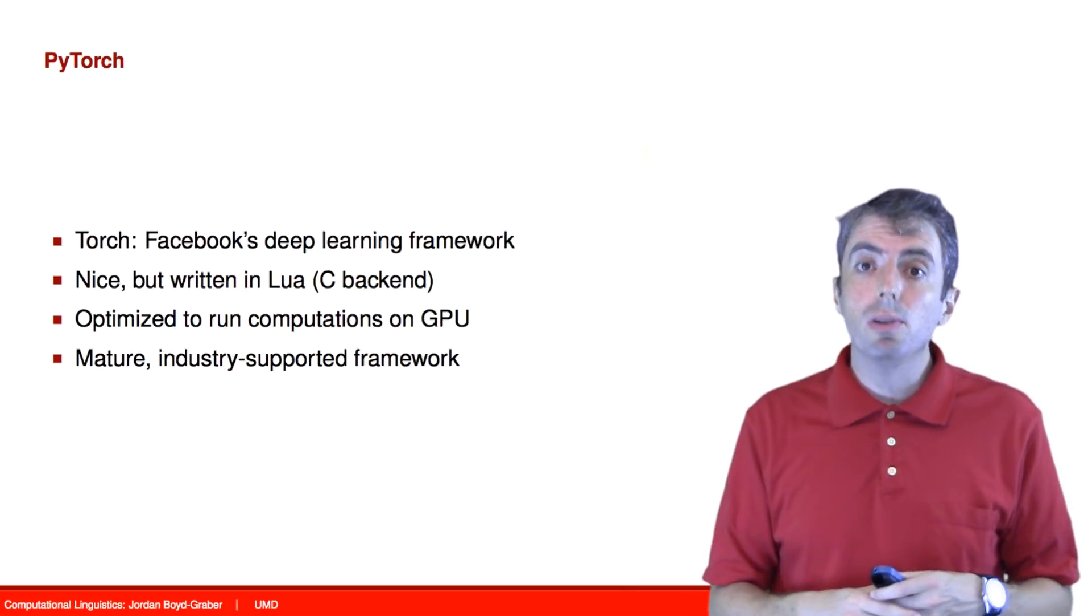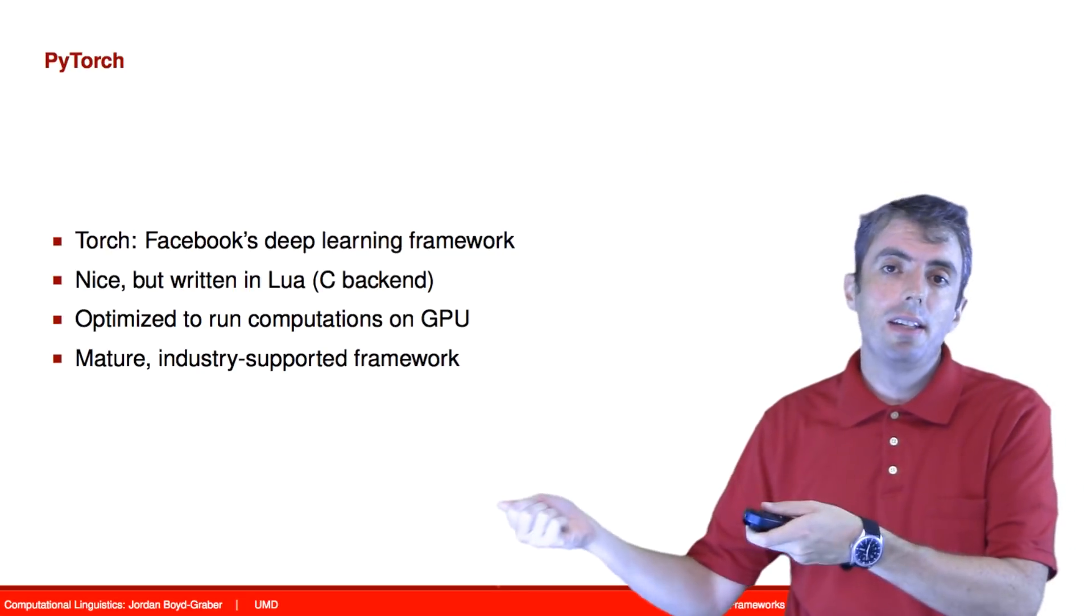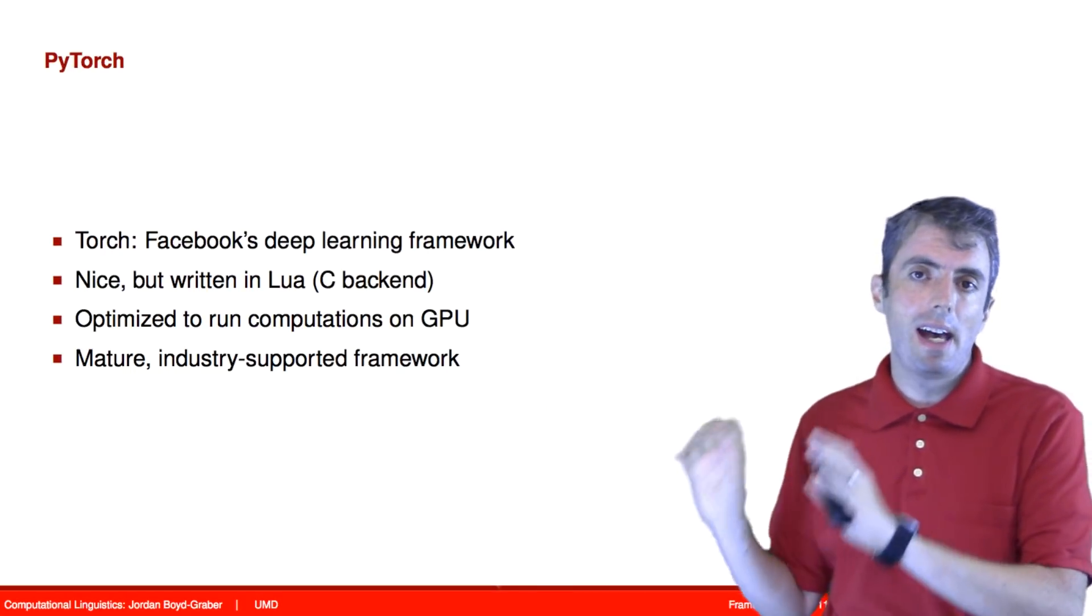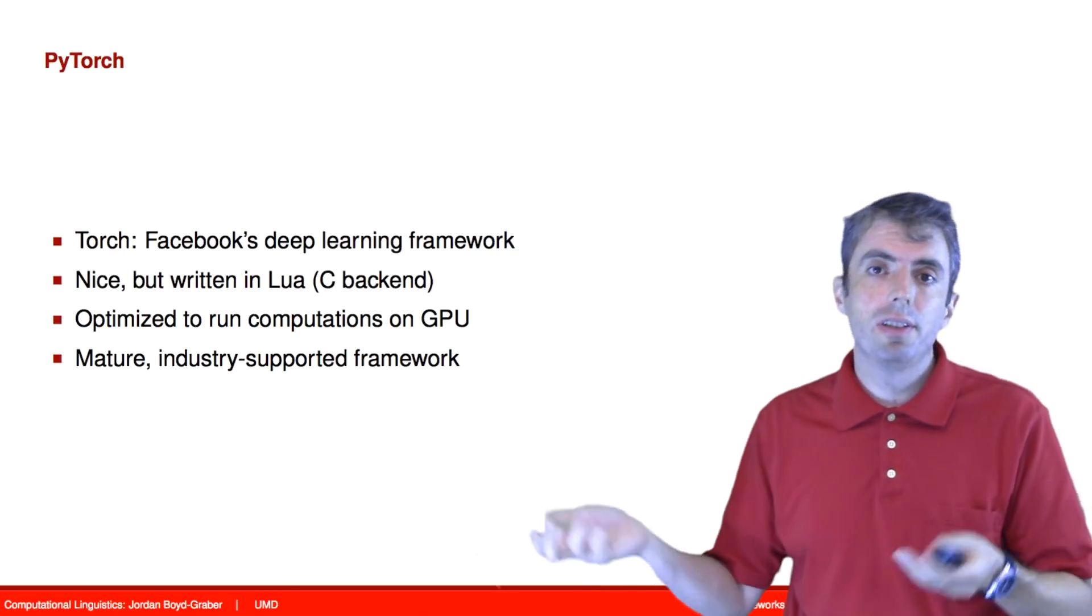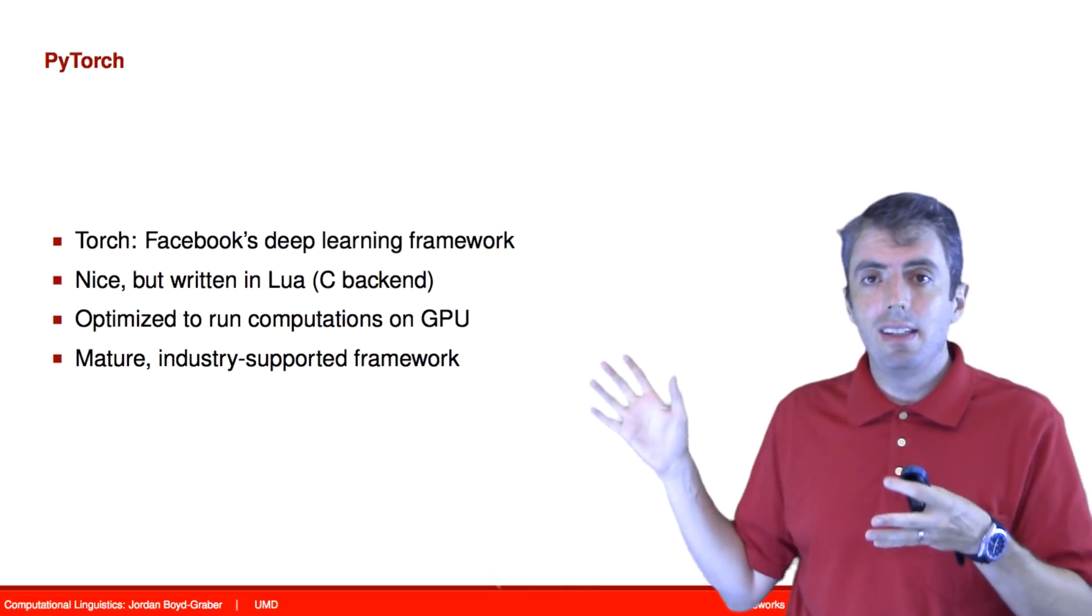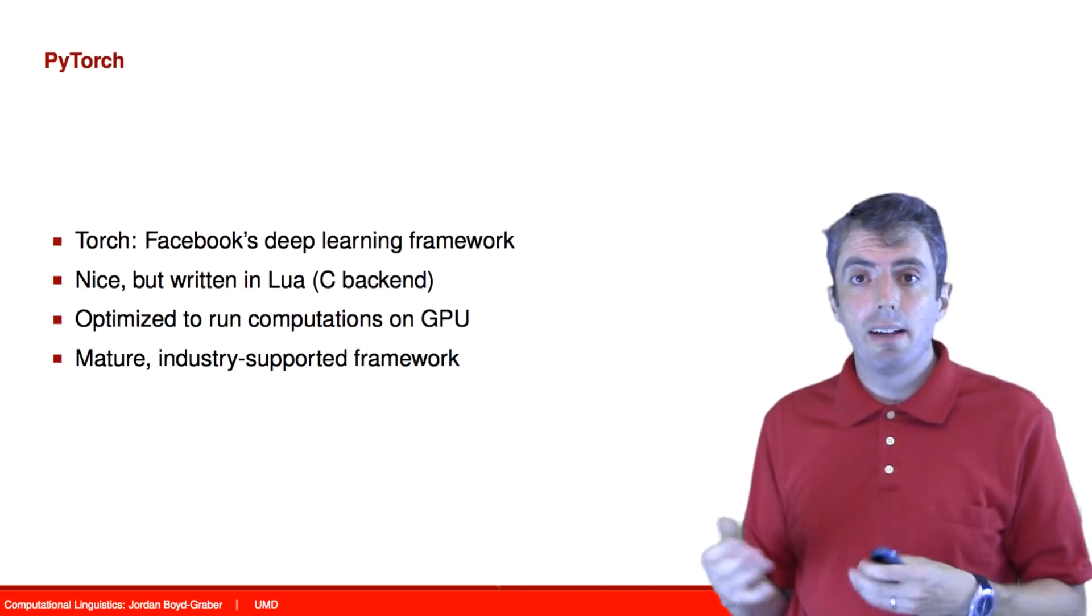And while there are several frameworks that allow us to do that, we'll be focusing on PyTorch. PyTorch grew out of a Lua framework for deep learning. It then transitioned into Python. In both cases, they're using a very, very fast C backend. And PyTorch is now an open source project. There are many developers, but the central effort is concentrated at Facebook AI research.